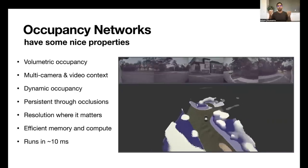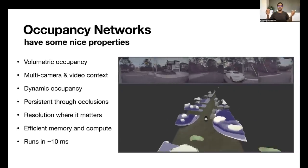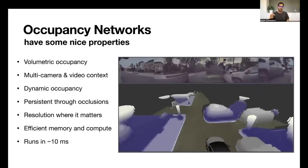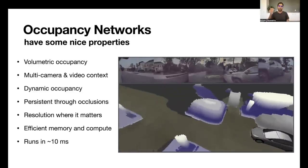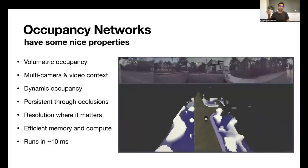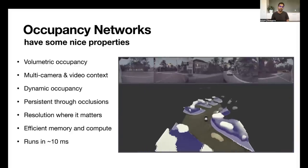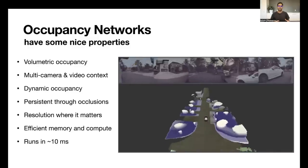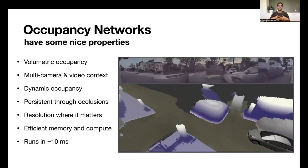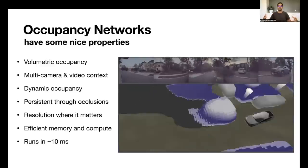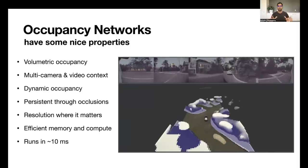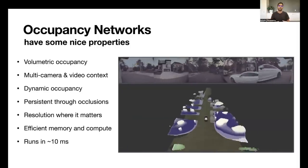So every voxel or every location around the car, the network produces whether that voxel is occupied or not. In fact, it produces a probability of that voxel or that 3D location being occupied or not. Like I mentioned, it takes in all the eight cameras and produces a single volumetric output. So there is no stitching of independent predictions to produce this. The network does all of the internal sensor fusion to produce a single consistent output space.